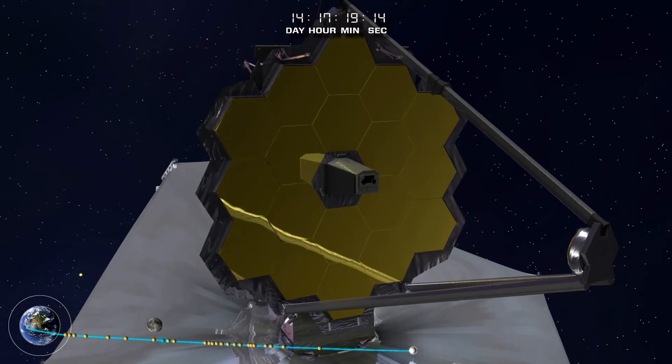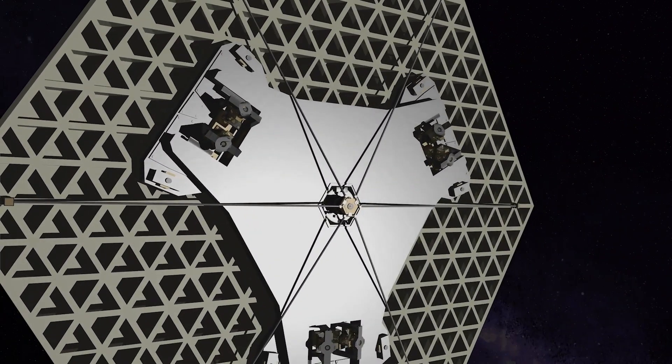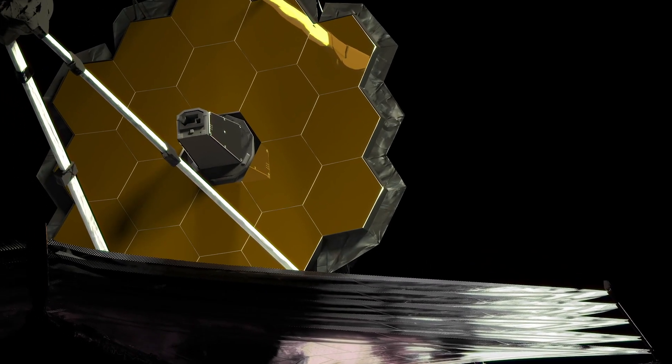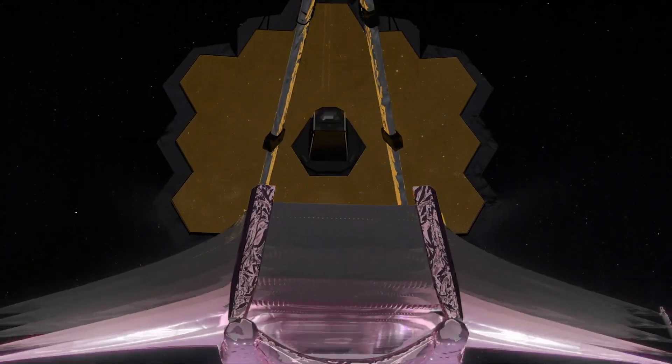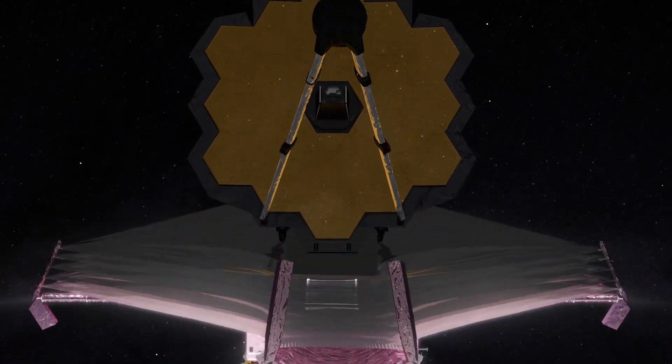Webb's golden mirrors are precisely aligned using motors behind each hexagonal mirror segment. Adjusting them to form one perfect mirror. Once the instruments are fully cooled, the exploration will begin.